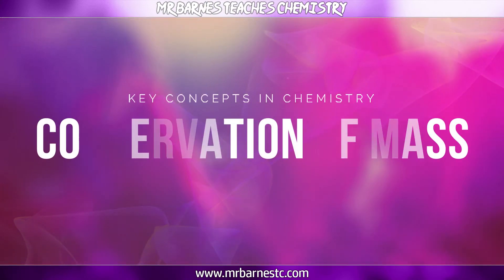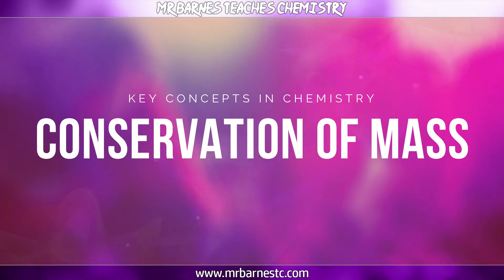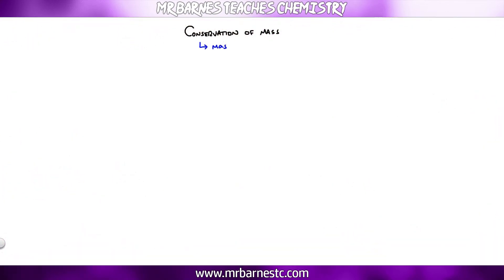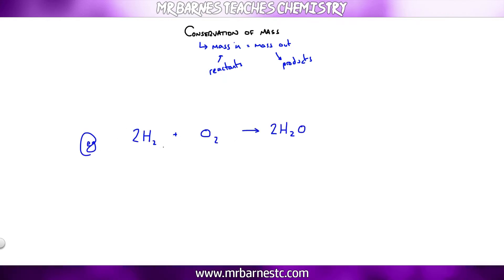The next section is conservation of mass. The definition: the mass you put into a reaction is always the mass you get out — reactants equal products. For example, 4 g of hydrogen reacting with 32 g of oxygen gives a total reactant mass of 36 g, so the product mass must also be 36 g. It doesn't matter what chemicals you use: mass in equals mass out.